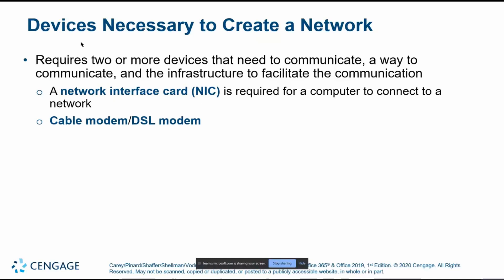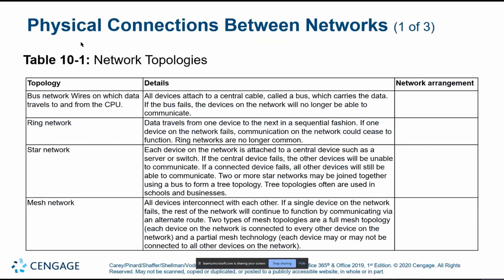Networks are arranged in different orientations called topologies. The first is a bus topology, which connects devices along a single wire called a bus. These are more common for small networks, but if that bus fails, the entire network goes down.